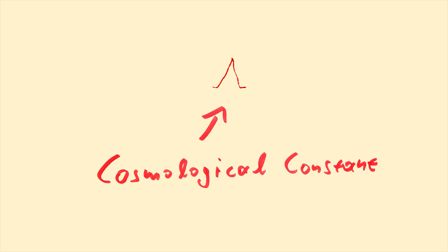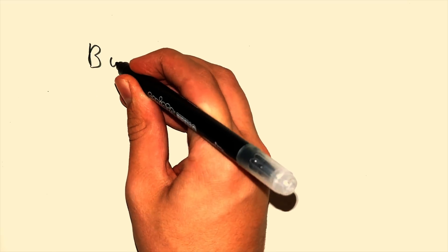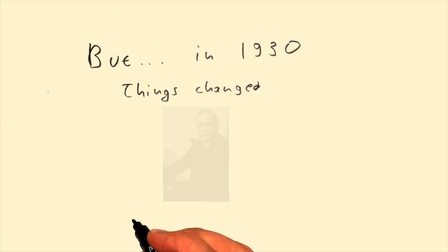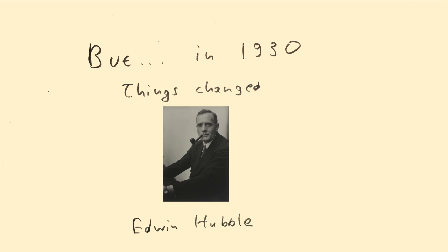That way, his theory would be consistent with the astronomical observations. But in 1930, things changed. Edwin Hubble, using the most powerful telescope at the time, made a revolutionary discovery.